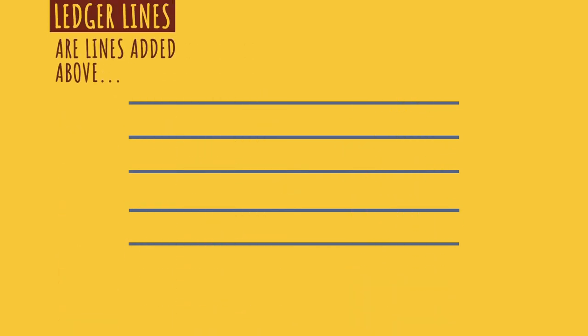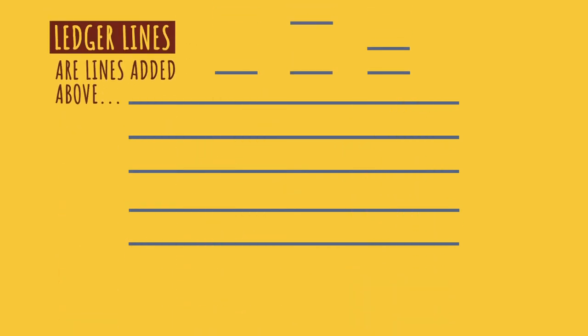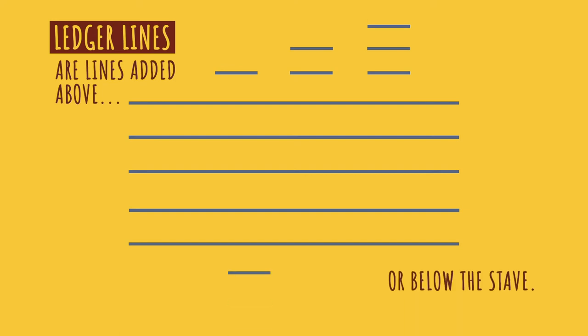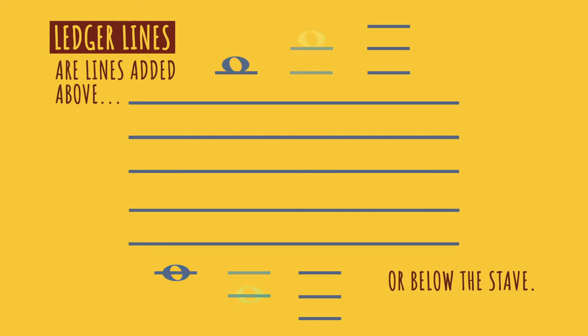When the notes go beyond the stave, ledger lines are added above or below the 5 lines to individual notes. Each note beyond the stave has its own line or lines.